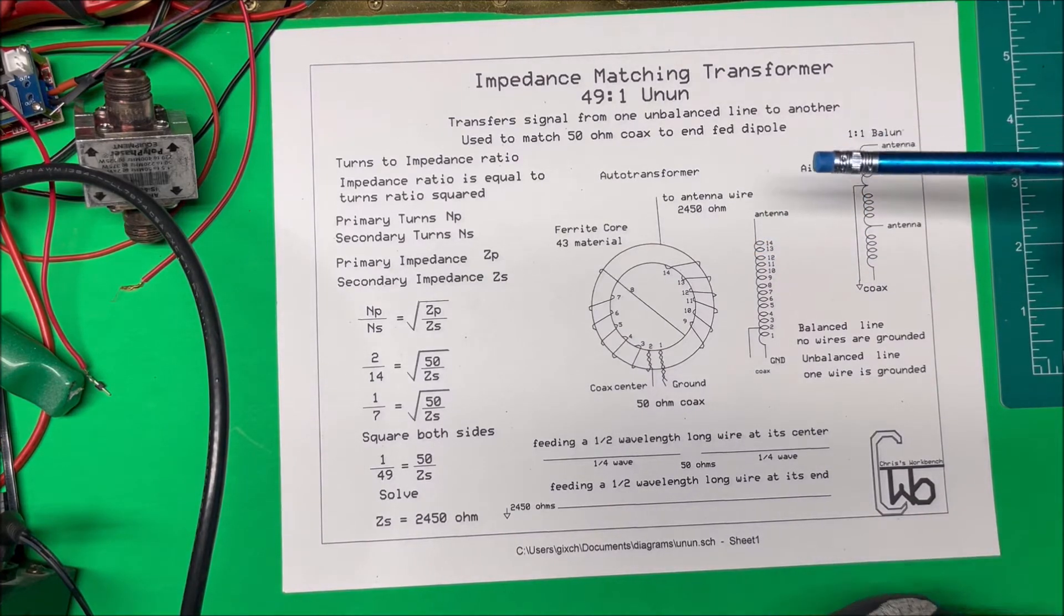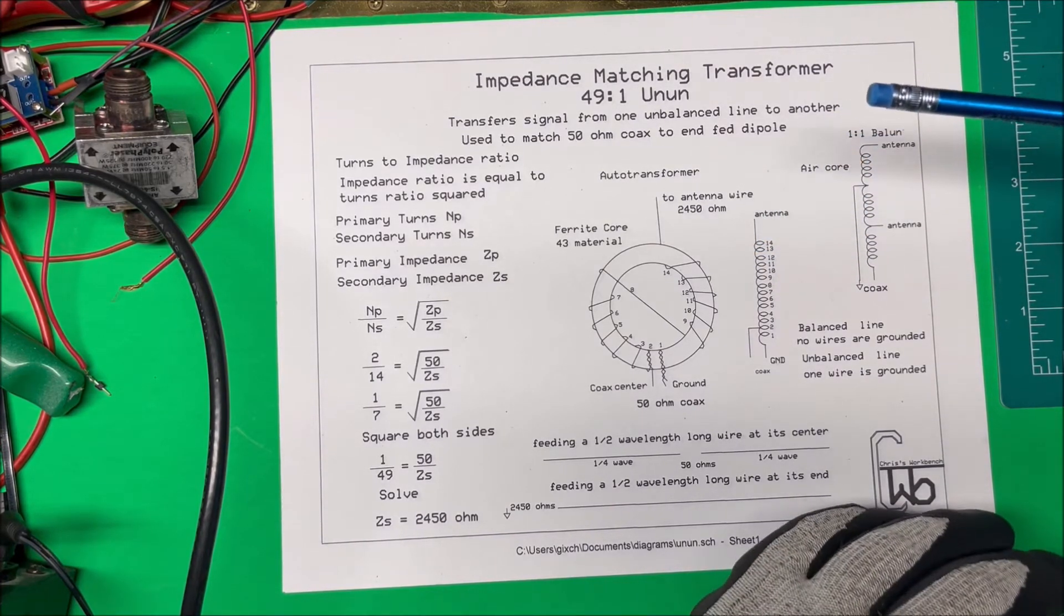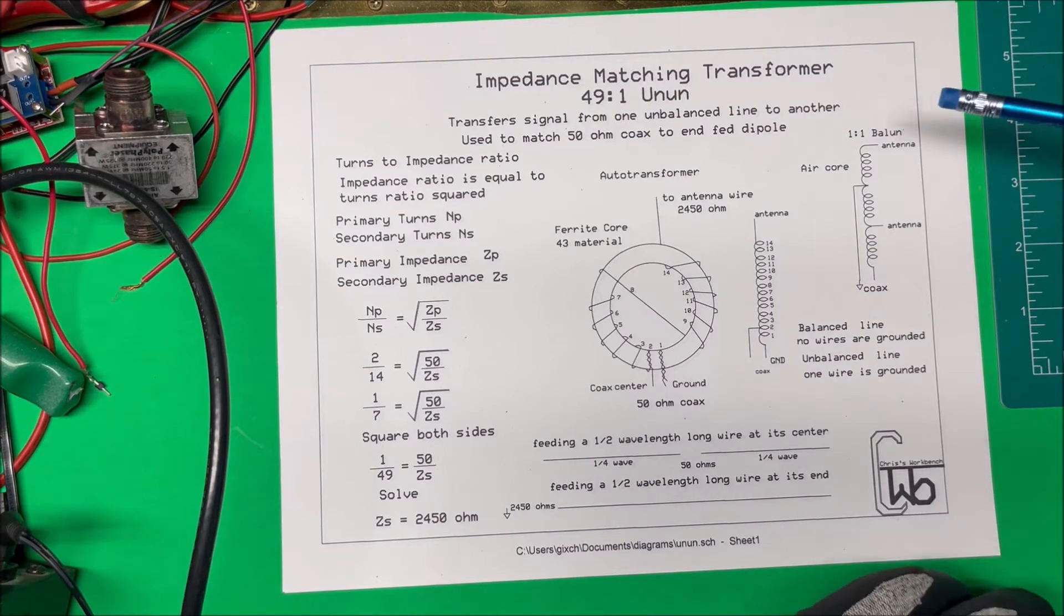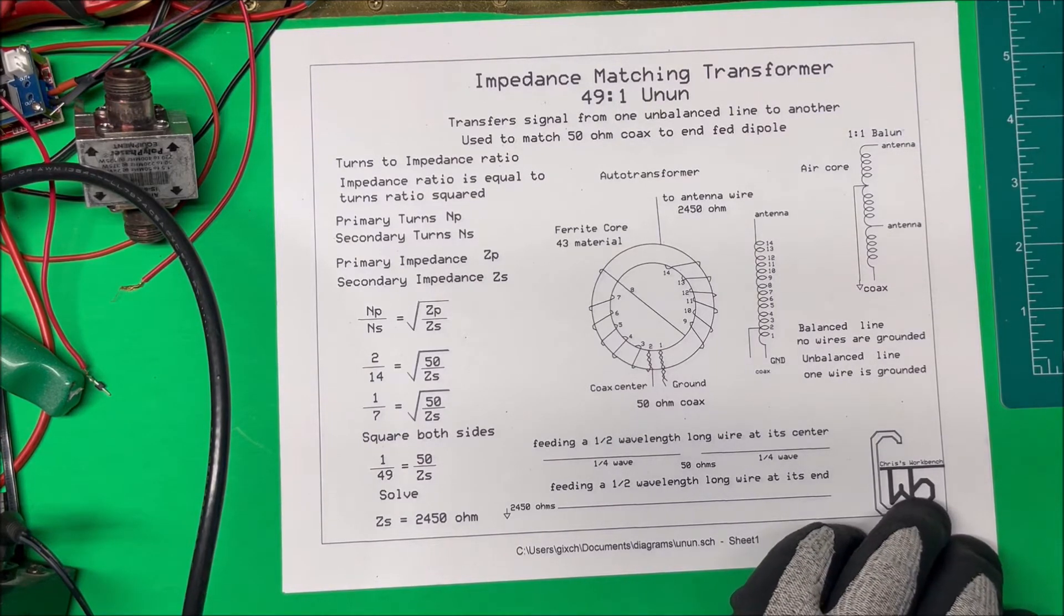Now what's the difference between a balun and an unun? Well a balun is you're going from a balanced line to an unbalanced line.